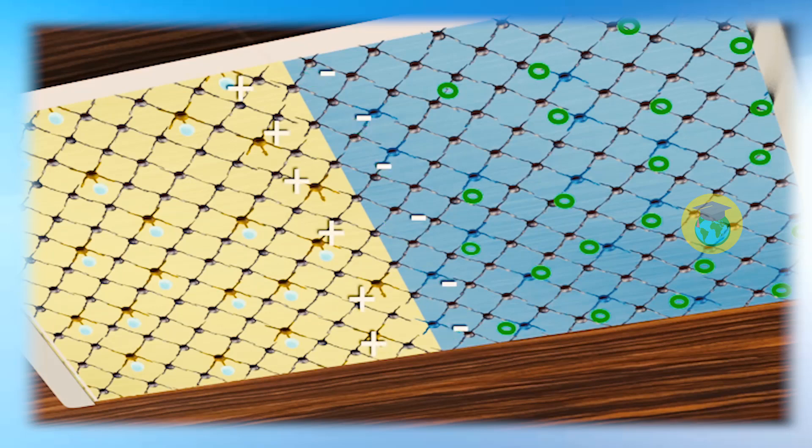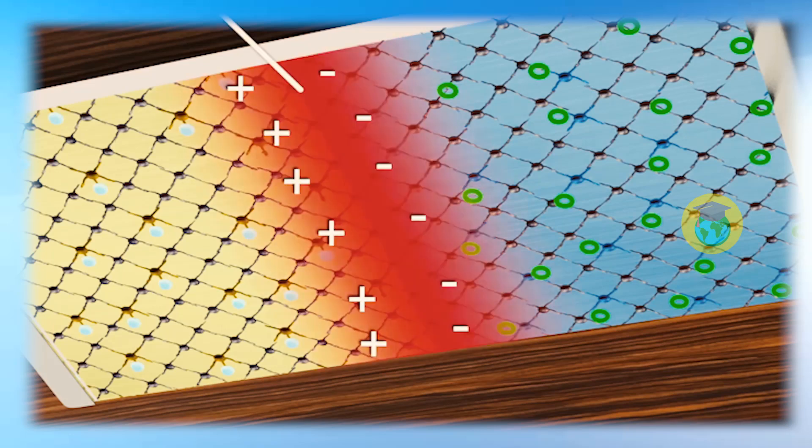At this junction, there are majority carriers. These majority carriers form a depletion region, which is why we need to add a certain width of barrier. We have to add voltage to overcome this barrier.